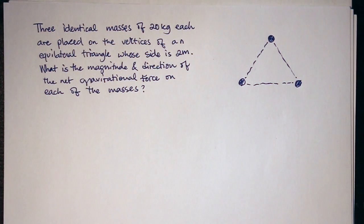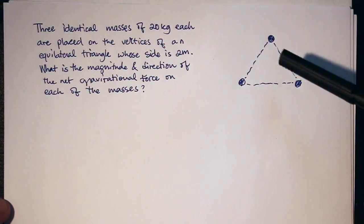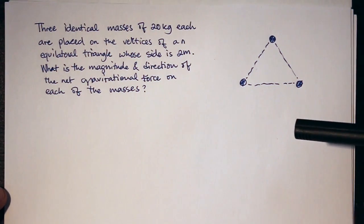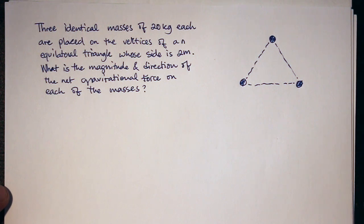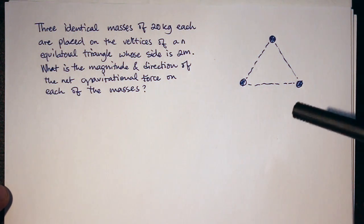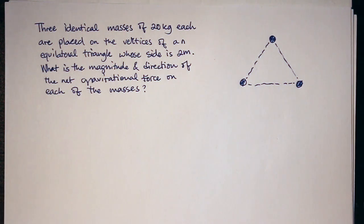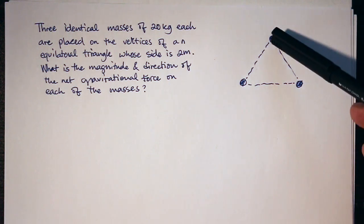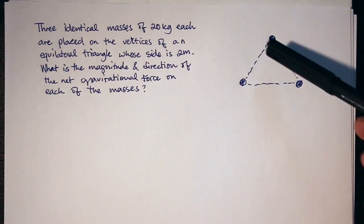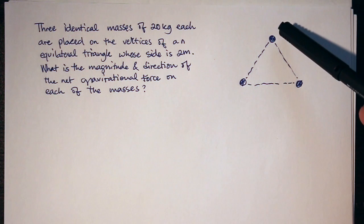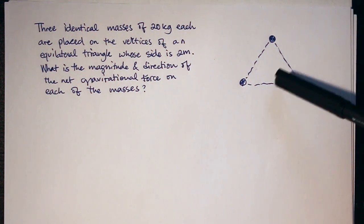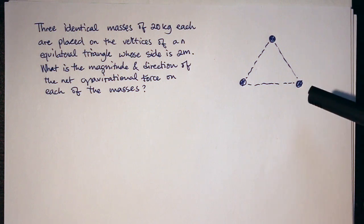The first thing I'm going to think of is this is an application of the gravitational force. In the gravitational force, the force is equal to G times the first mass times the second mass over the distance between them squared. I'm going to isolate each of the masses, figure out what the forces are on each of the masses, and then add them vectorially to find the resultant net force on each of the masses.